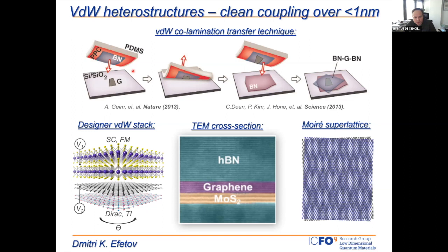People learned to do this with many other materials, including hexagonal boron nitride, which is an insulator. This happened mostly at Columbia, with the groups of Philip Kim, Jim Hone, and Cory Dean. People also learned to stamp these two-dimensional materials on top of one another and assemble them vertically in designer Van der Waals stacks. The surprise was that the interfaces formed by this rather crude technique were still extremely good.